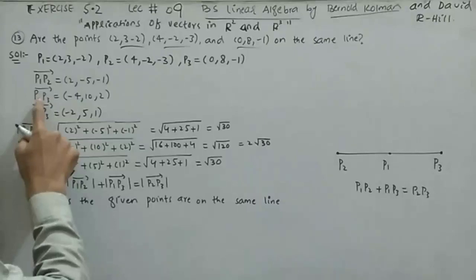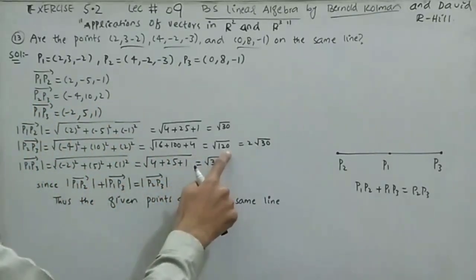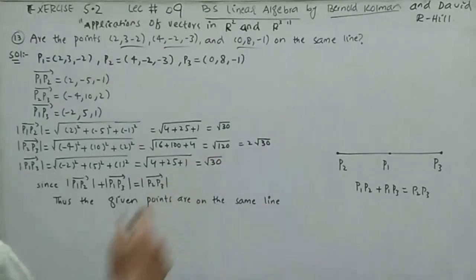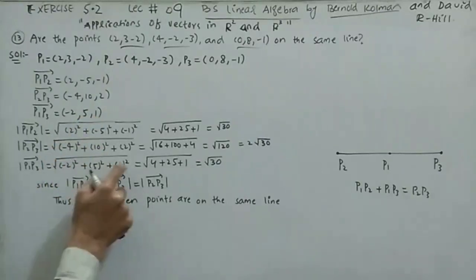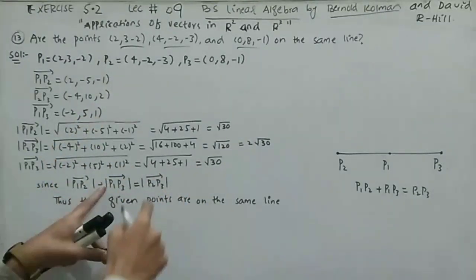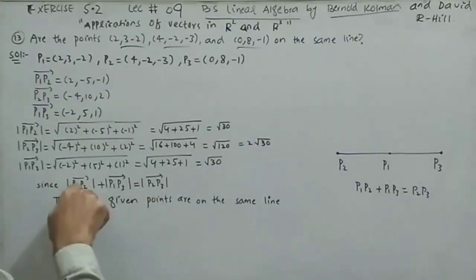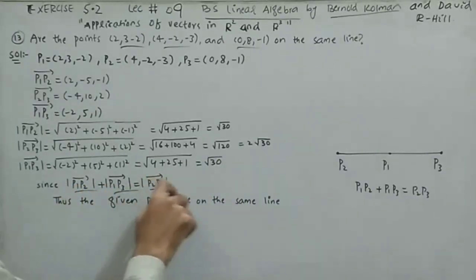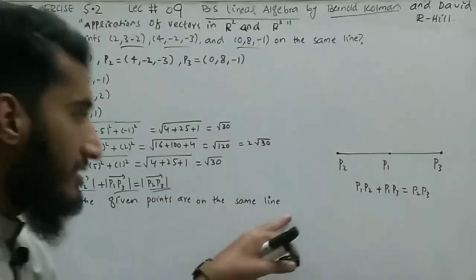The magnitude of P2P3 = √((-4)² + 10² + 2²) = √120 = 2√30. The magnitude of P1P3 = √((-2)² + 5² + 1²) = √30. Since |P1P2| + |P1P3| = √30 + √30 = 2√30 = |P2P3|, the given points lie on the same line.